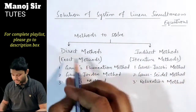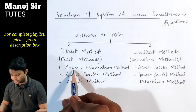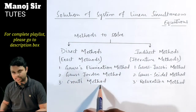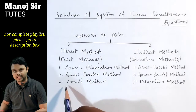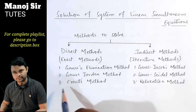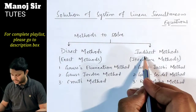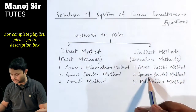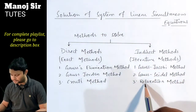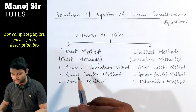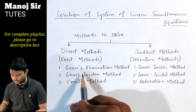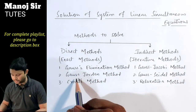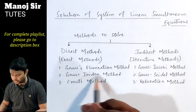In the direct method we study the Gauss elimination method, Gauss-Jordan method, and Cramer's method, which is also known as LU decomposition method. In indirect methods we study the Gauss-Jacobi method, Gauss-Seidel method, and relaxation method. In video one we studied Gauss elimination, and in video two we discussed Gauss-Jordan method.